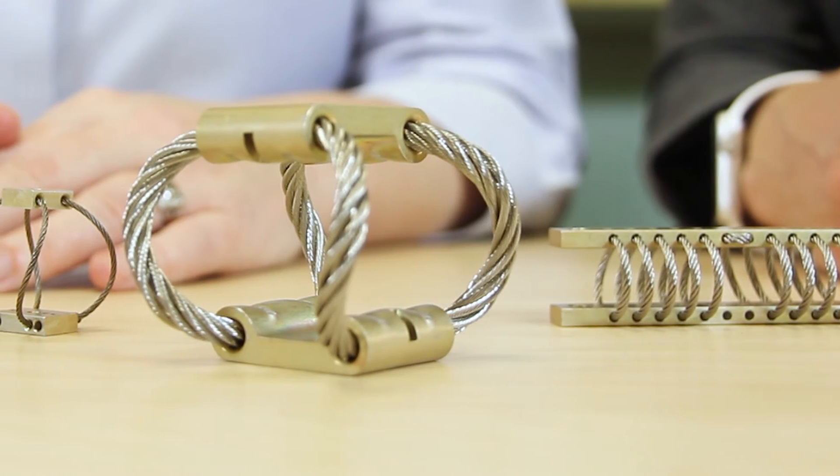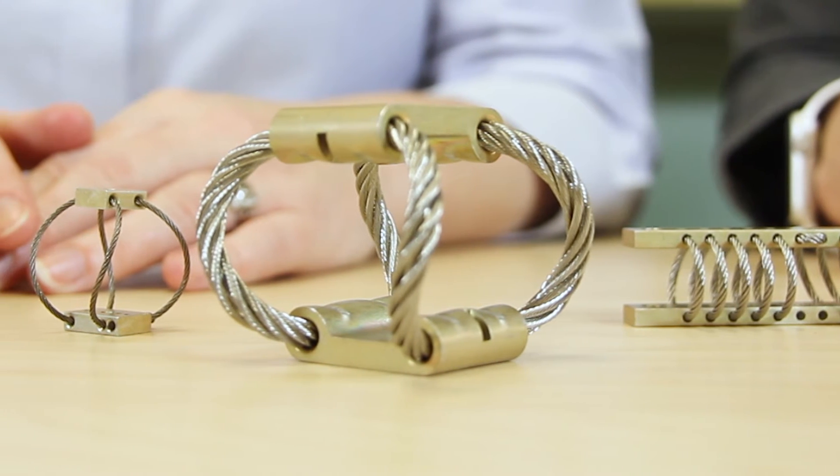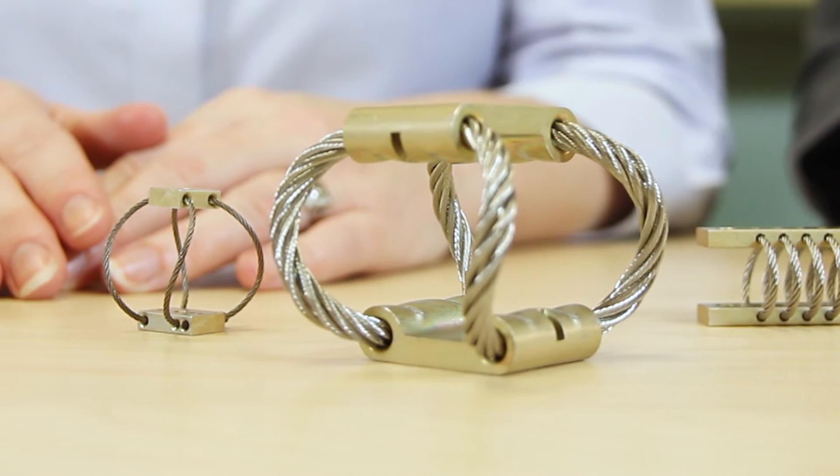Standard wire rope isolators such as these from ITT Anodyne are made of stranded stainless steel cable that threads through aluminum alloy retaining bars. In some cases, the split bars clamp onto the cables.